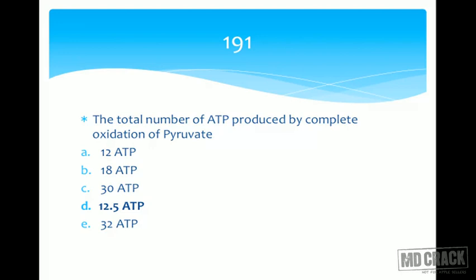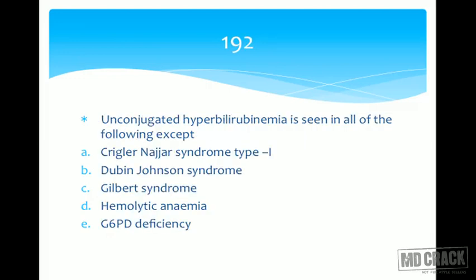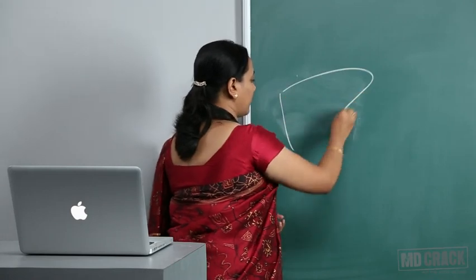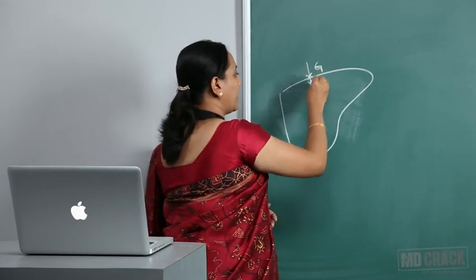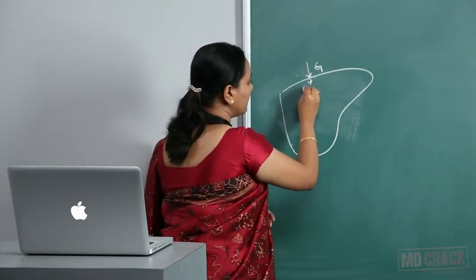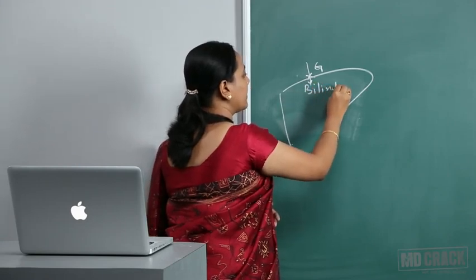Next question: unconjugated hyperbilirubinemia is seen in all of the following except — Crigler-Najjar syndrome type 1, Dubin-Johnson syndrome, Gilbert syndrome, hemolytic anemia, glucose-6-phosphate deficiency. The answer is Dubin-Johnson syndrome, where we get conjugated hyperbilirubinemia and not unconjugated. In the liver, if uptake is deficient we call it Gilbert's, and if conjugation is deficient it is Crigler-Najjar.